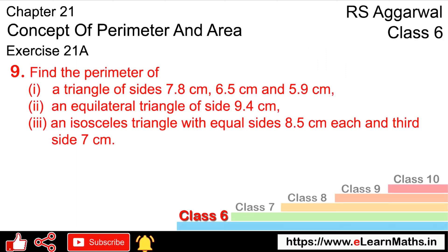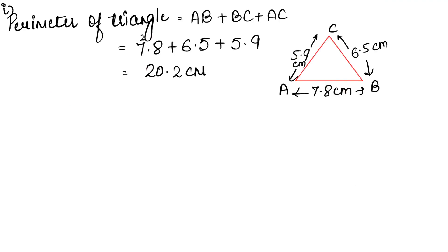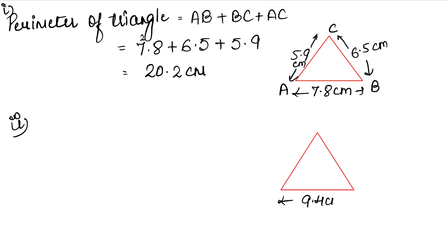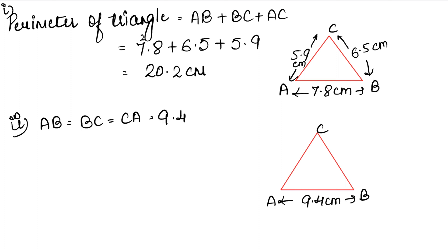Let's do the second part now. The second part is an equilateral triangle of side 9.4 cm. This is an equilateral triangle. We know that all sides are equal — AB, BC, and CA are all 9.4 cm.